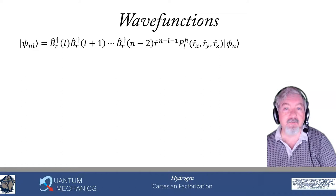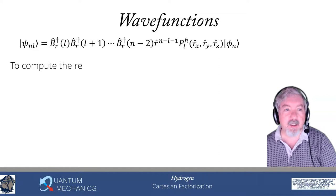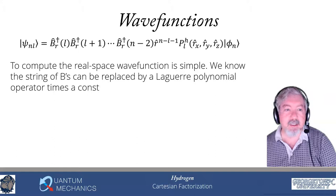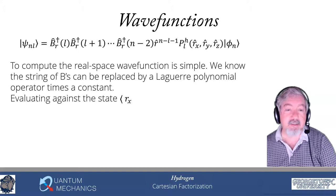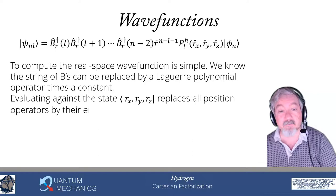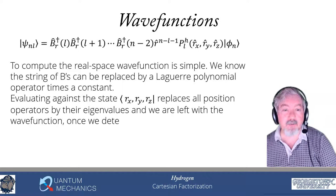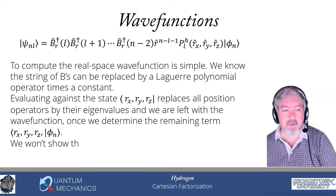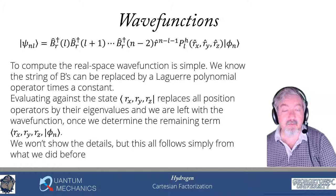Now we look at the wave functions. The product of B operators acting on these states can be rewritten in terms of a Laguerre polynomial operator times a constant — essentially the same algebra as before. When we evaluate against the position eigenstate, we replace the operator by a function of R, pulling out the Laguerre polynomial. We're left with the auxiliary Hamiltonian ground state involving rx, ry, rz times φ_n.